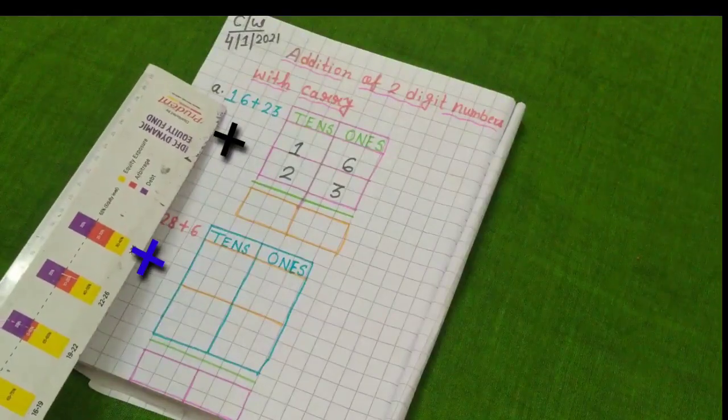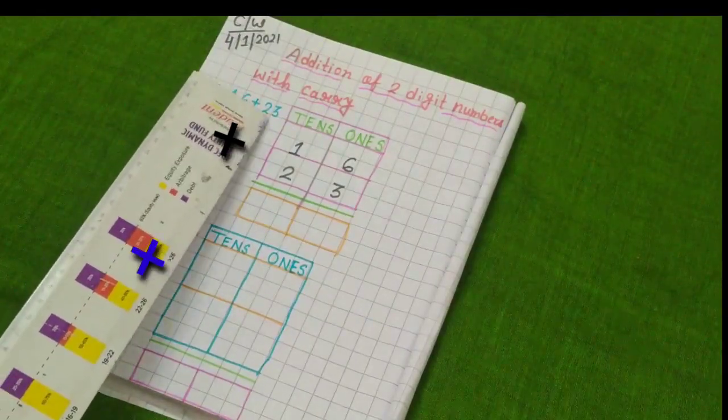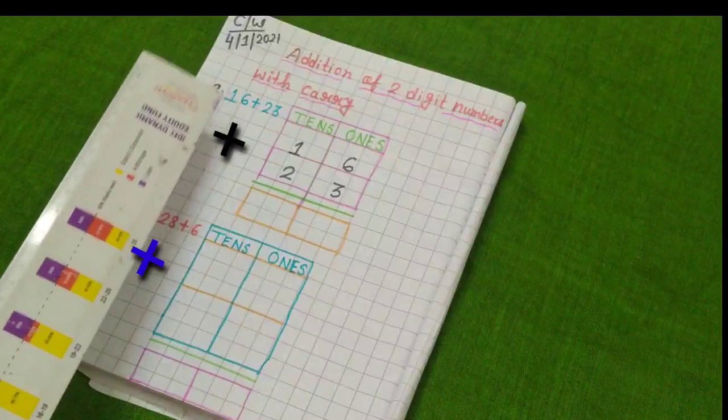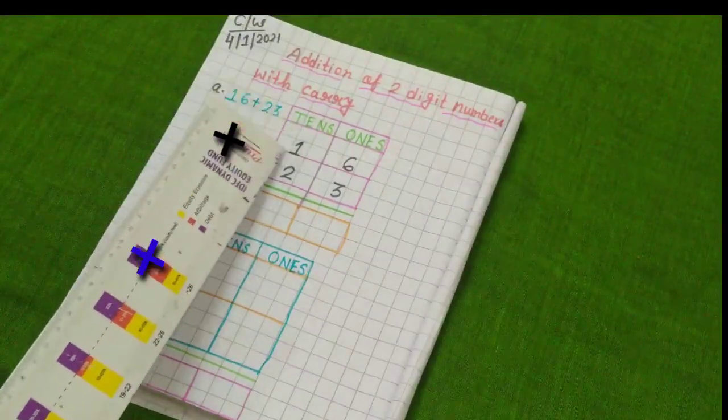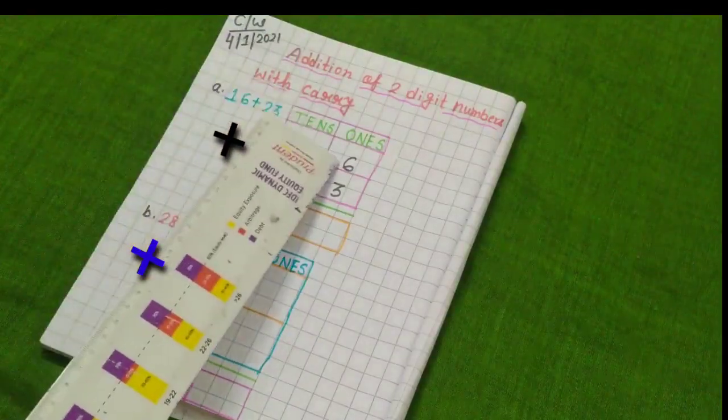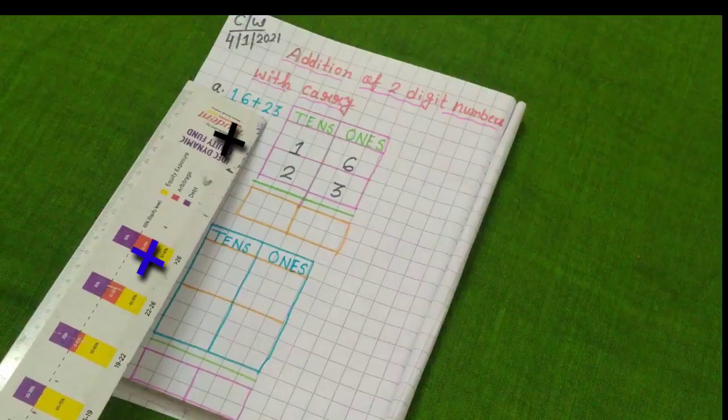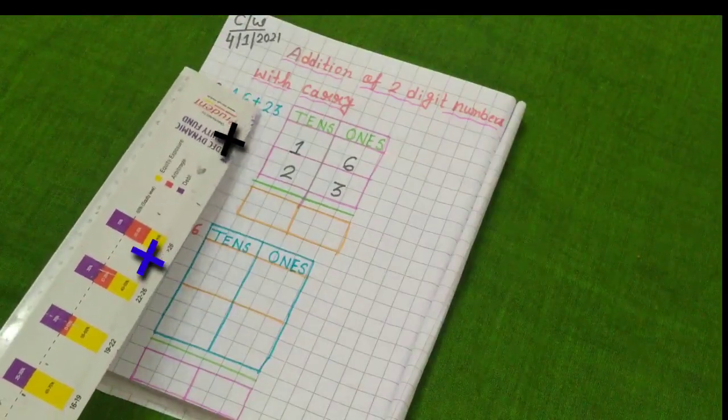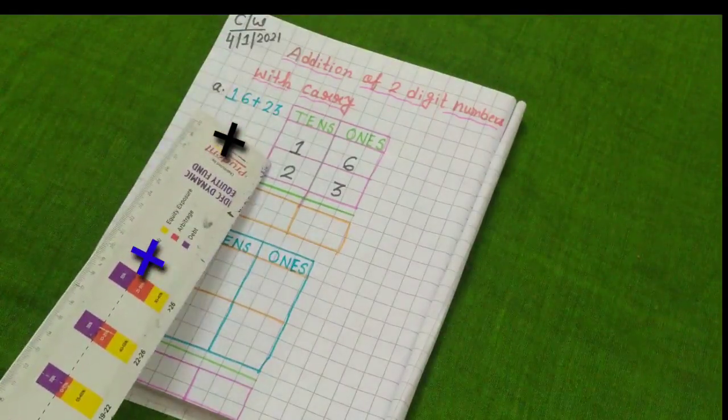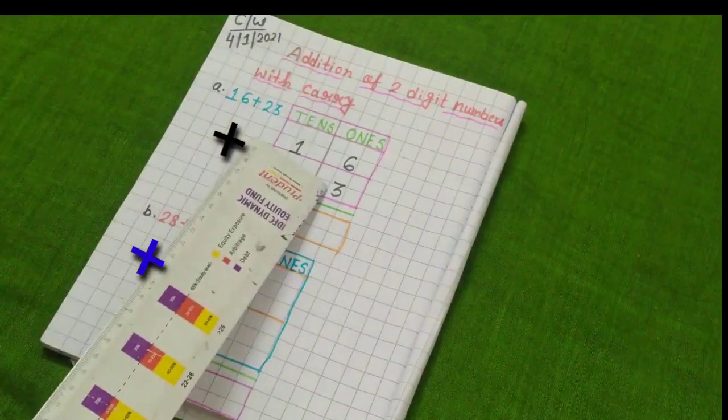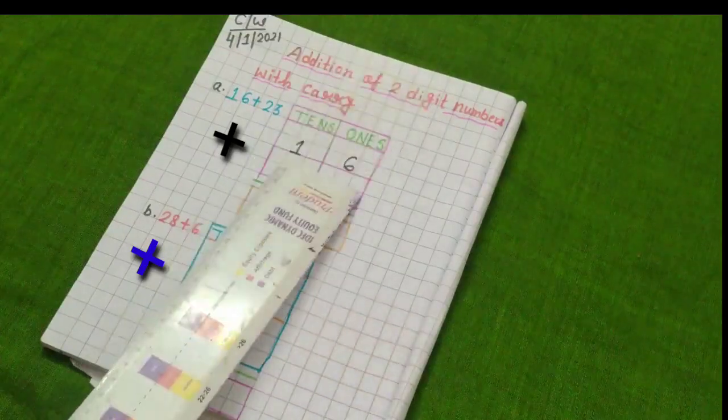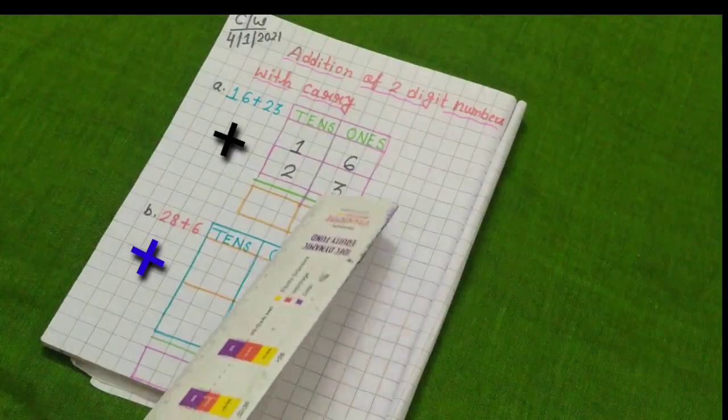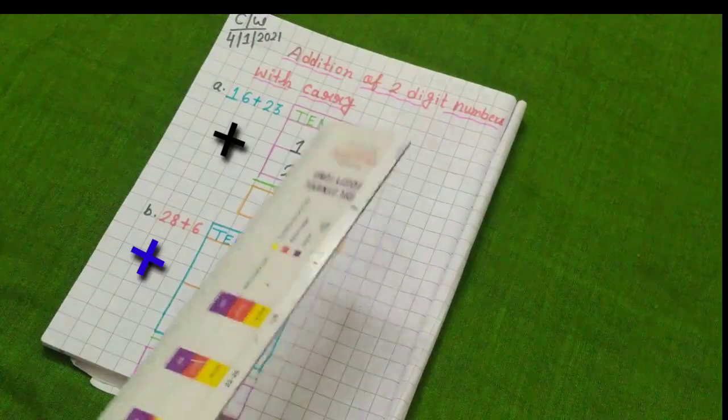Here you can see I have written 16 plus 23. So, 16 means 1 tens and 6 ones. So, that's why I have written 1 in tens place and I have written 6 in ones place. Similarly, 23 means 2 tens and 3 ones. That's why I have written 2 in tens place and I have written 3 in ones place. Understood everybody? Now, what I will do first? First, I need to add the ones digit number.